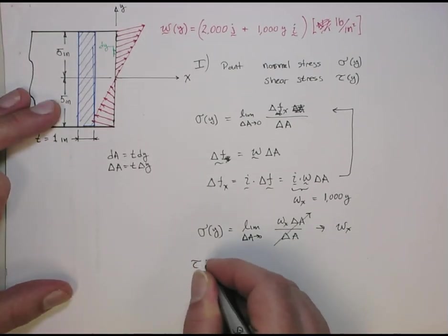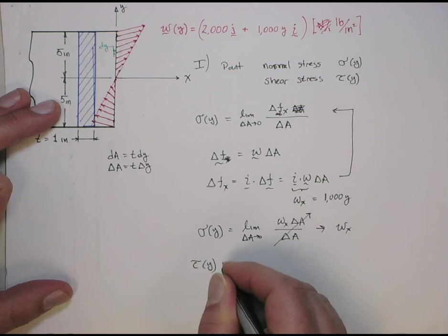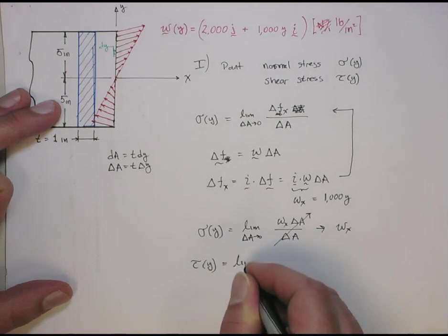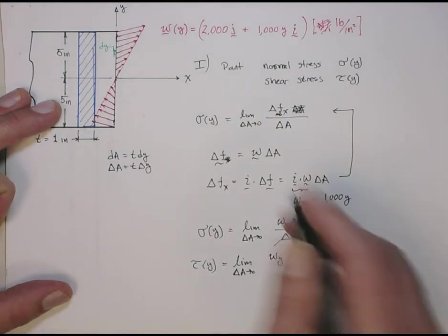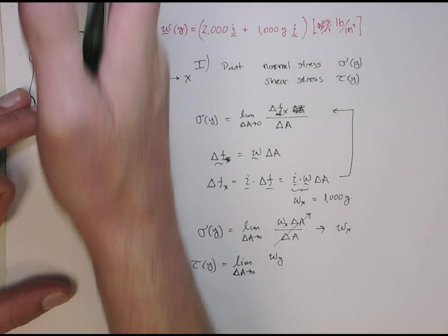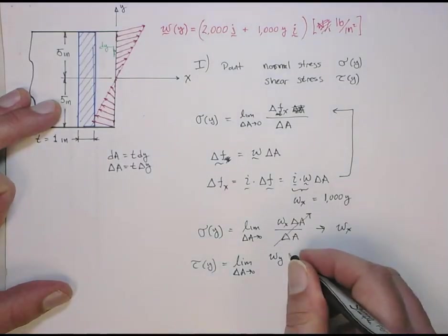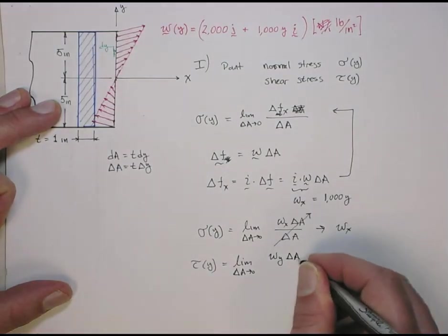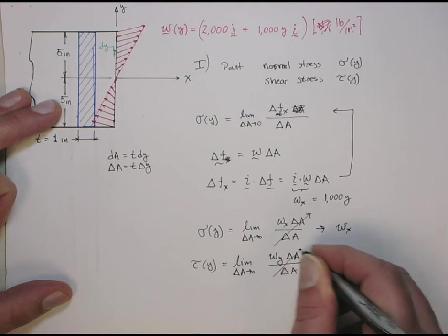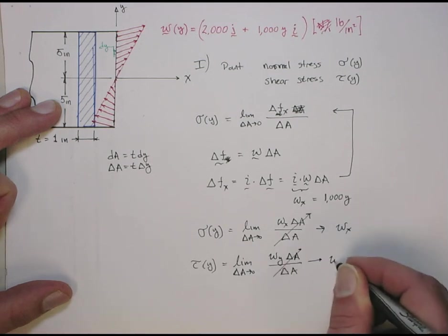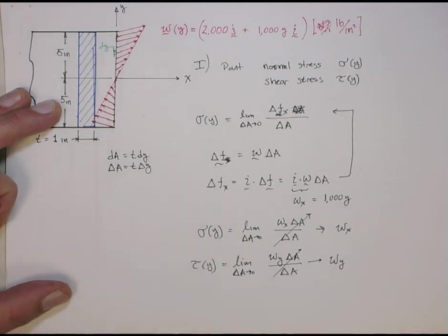You can do the same process for tau, the shear. Now, we're talking about the y component because that's the component of this traction in the shearing direction. Again, they cancel out, and this just becomes the y component.